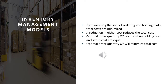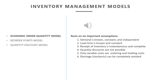For this, we have made six simplifying assumptions. First, demand is known, constant and independent. Second, lead time is known and constant. Third, received inventory is instantaneous and complete — meaning lead time is effectively zero. Fourth, quantity discounts are not possible. Fifth, the only relevant costs are the holding cost and the ordering cost, meaning there are no hidden or indirect costs. Sixth, we cannot turn down orders — shortage is not an option.